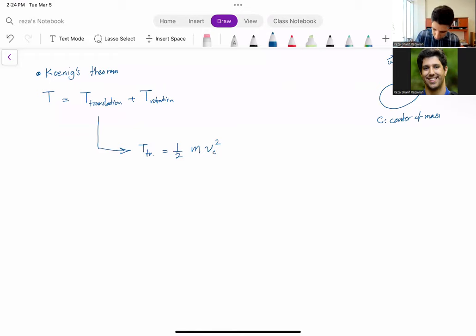And the rotational one is one half omega transpose times i times omega. And this is the same matrix notation, essentially an equivalent of i omega squared. And this i is about center of mass.